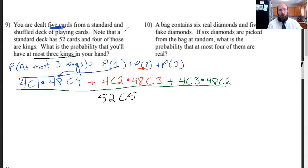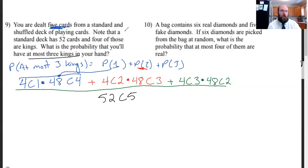This can also be typed directly into your calculator. It's under the Math button, then go to Probability — it should be listed as NCR: N for the total number of options, C, R for the specific number chosen. So N-C-R gives you the combination value directly.